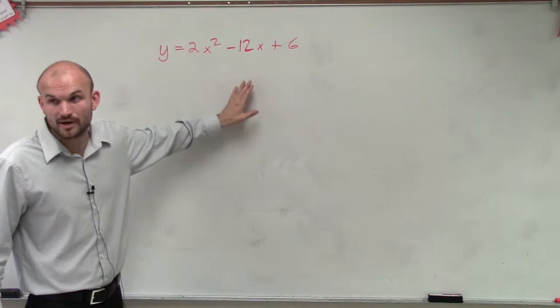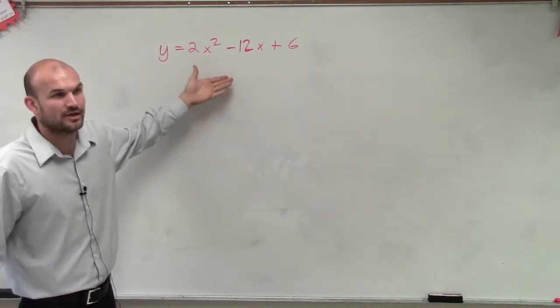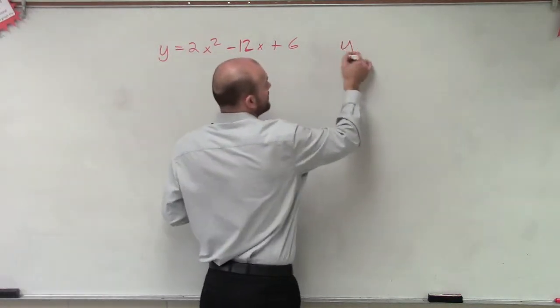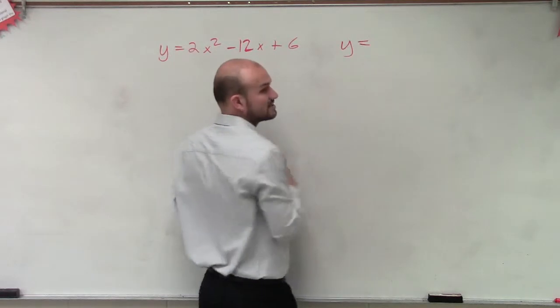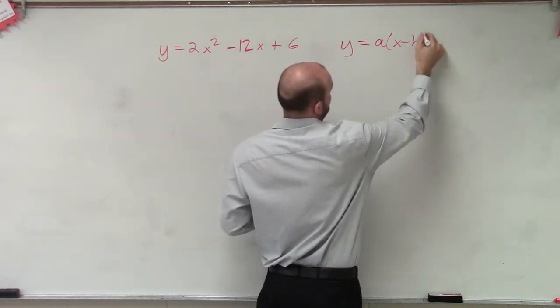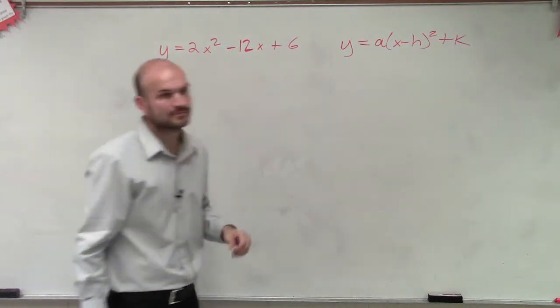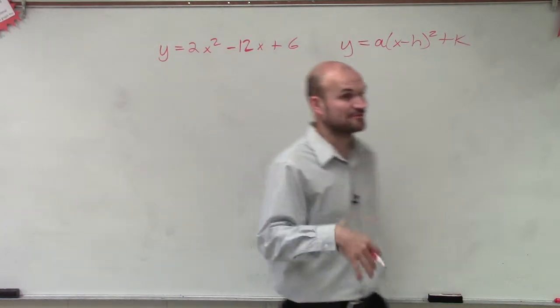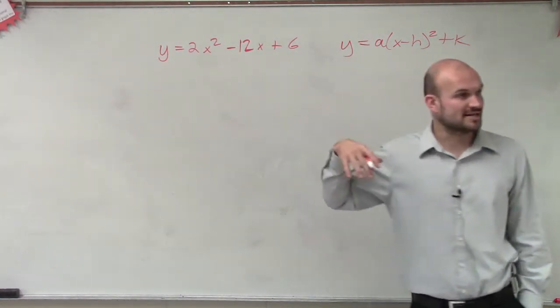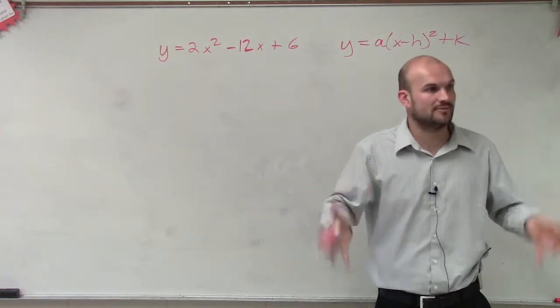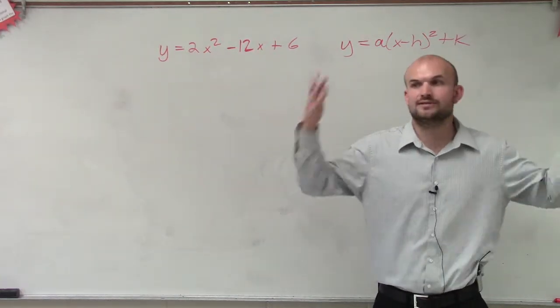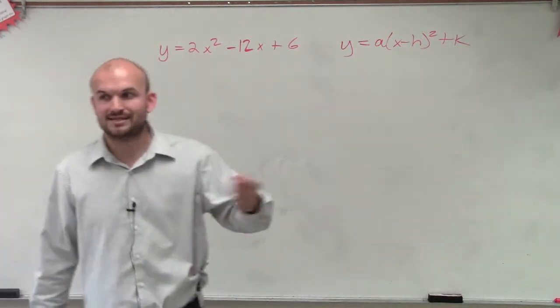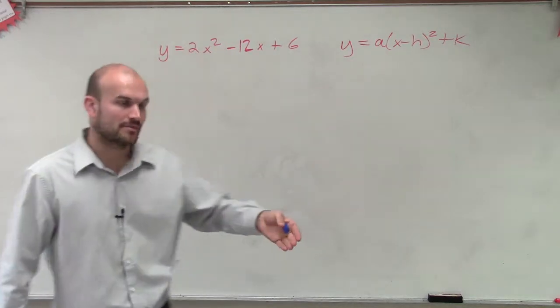Right now, this is in standard form. So you guys could graph this by using a graphing calculator, or you could use a table of values. We can graph it, that's not the problem. But we know that if I want to graph it by using the focus and the directrix, I need to have it in this format. So we need to put it into that format. If you guys remember, we did this before, because we practiced doing standard to vertex form so we could graph something by transformations. Remember we did that? Because h and k told us transformations and the vertex.